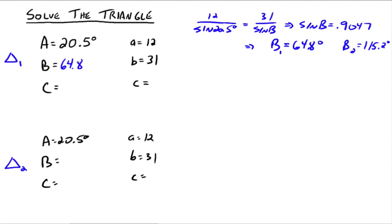So this will be 64. This will be the first one, 64.8 degrees. This will be the second one, 115.2 degrees. And now we've got to figure out what C is. Well, that's easy for both of them. C up here would be 94.7 degrees, and C down here would be 44.3 degrees. And then use the law of sines to figure out little c.